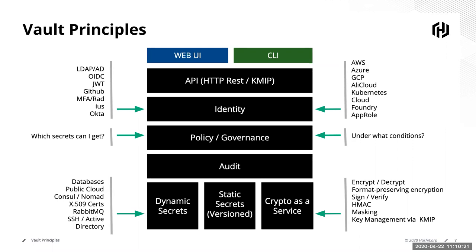AWS has IAM, GCP has its own IAM system, Azure has Azure application groups, Ali Cloud has its own alternatives. If you're running on Kubernetes, Kubernetes has an identity system — a pod has a JWT with a wrapped namespace and service account. Cloud Foundry uses its own identity methods. Ultimately, there are a lot of machine authentication methods available, and regardless of how you log into Vault and establish your identity, you get a short-lived token that identifies you for follow-up operations.